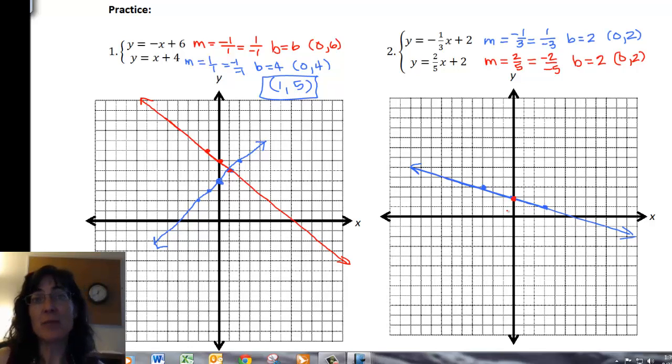So I know automatically that's my intersection point, so I can just write my intersection point here. But since we were asked to graph these, I want to be sure I do that.